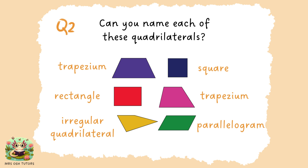Question two: I had sneakily included the same type of quadrilateral twice just to give you a little extra test — see if you managed to get any of those correct. If you didn't, definitely brush up on your geometry at home. Remember, a quadrilateral is just a four-sided shape, and there are various names for the different types you might come across.